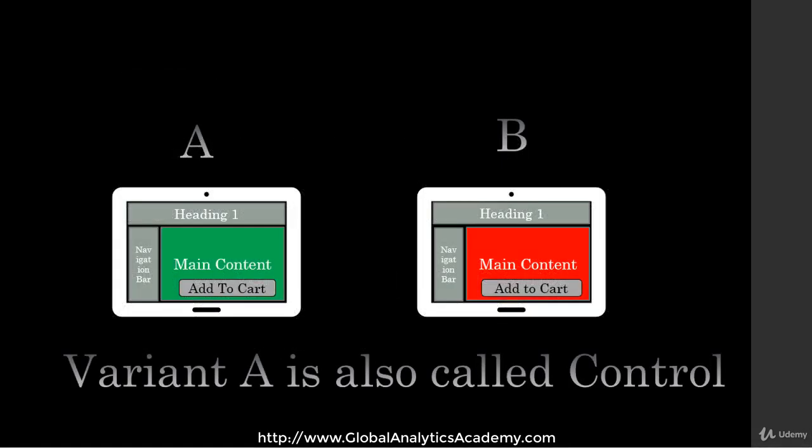Variant A is the original and is also called control. Other variants contain one or more elements that are modified from the original. For example, you could use a different call to action button, different wording on the button, a different headline, or different images. What you're doing is testing version A and comparing other versions to it to see which one drives a better outcome.